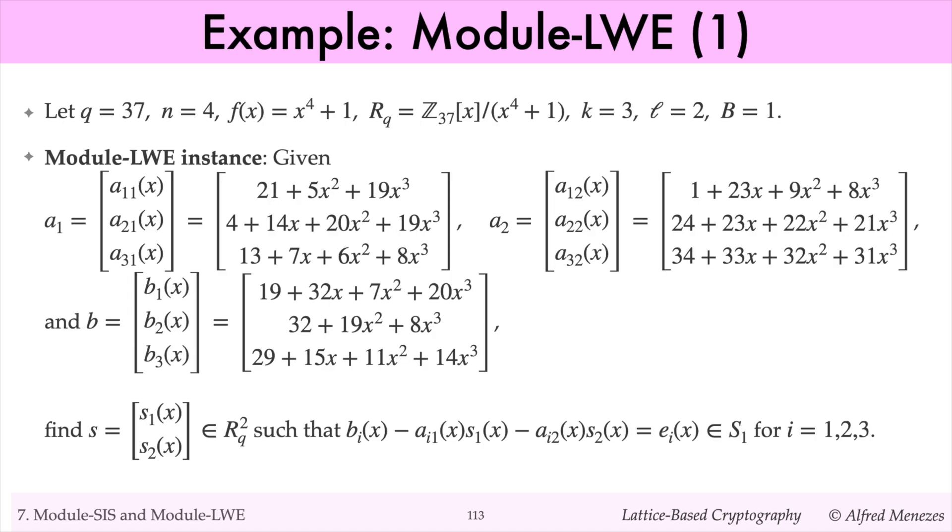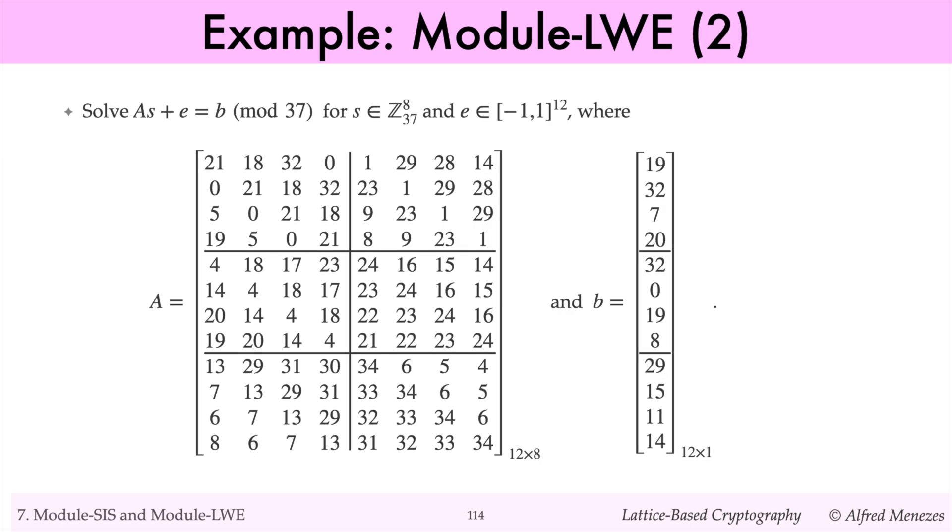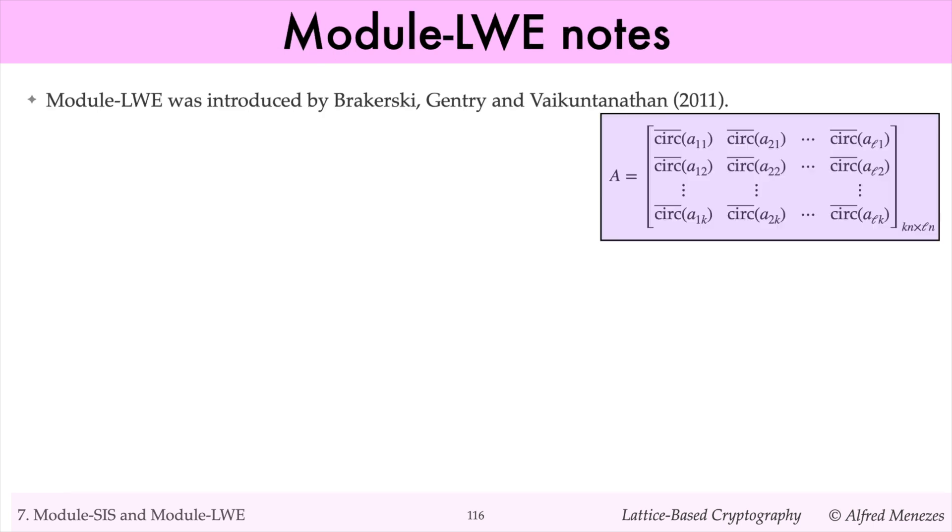You can find an example of module LWE in slides 113 to 115. The module LWE variant of LWE was introduced in 2011 by Brikersky, Gentry, and Wykuntanathan. You can check that setting L equals 1 gives an instance of ring LWE. Also, setting n equals 1 gives an instance of LWE. So module LWE interpolates between LWE and ring LWE.